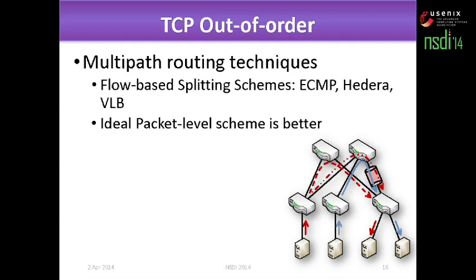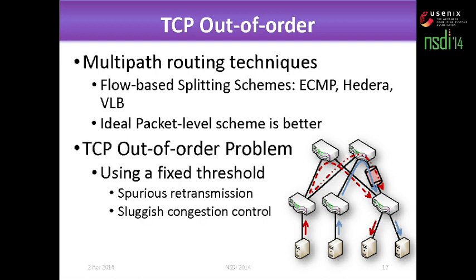Then we consider the TCP out-of-order problem. Why do we think this is a problem? Because a lot of redundant links exist in data center networks now, so multiple routing techniques become very important. Currently, a lot of these techniques are based on flow-based splitting schedules. Why don't people do ideal packet-level scheduling? It's because of the TCP out-of-order problem. TCP currently uses a fixed threshold to distinguish between out-of-order and lost packets, which causes a lot of problems as mentioned in older papers. The conclusion is: accurately distinguishing between lost and out-of-order packets can tackle the TCP out-of-order problem.